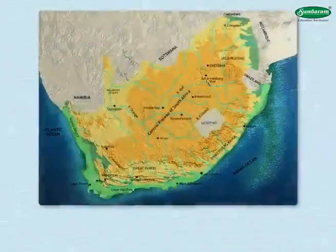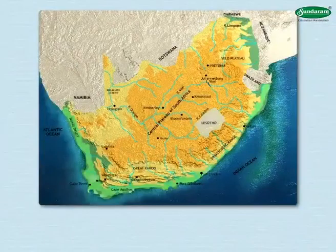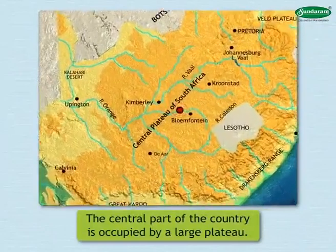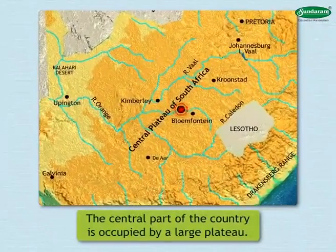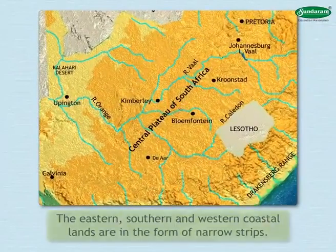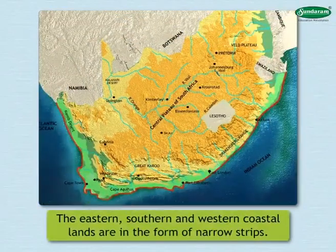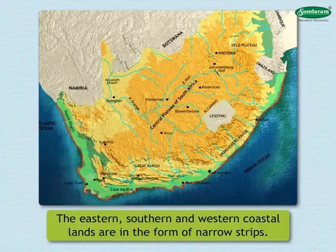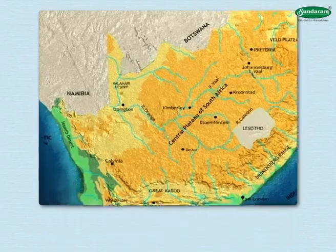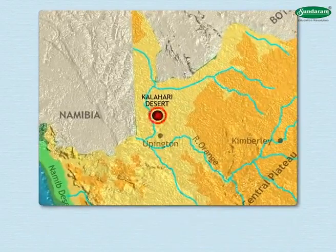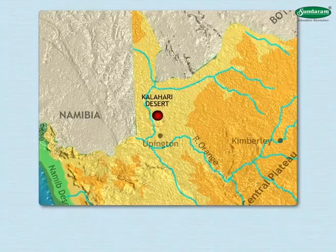See this color map. You will realize that the central part of the country is occupied by a large plateau. The eastern, southern and western coastal lands are in the form of narrow strips. A hot desert can be seen in the northwestern part.